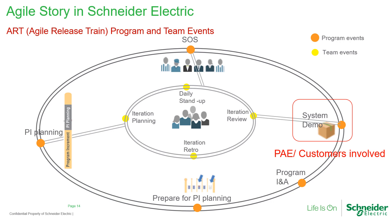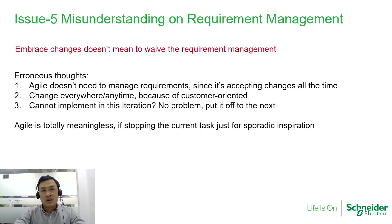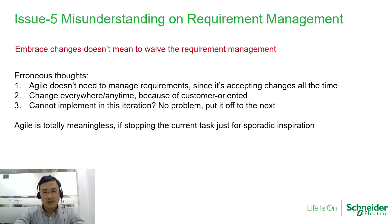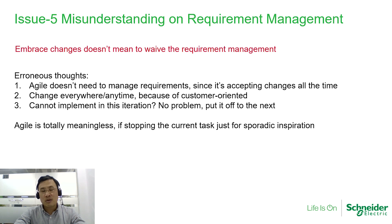The fifth misunderstanding is about requirement management. Embracing changes does not mean waiving requirement management — we still need careful requirement management. Three wrong ideas: First, Agile does not need requirement management since it accepts changes all the time — this is totally wrong. Second, that every change request is accepted because Agile is customer-oriented — no. In fact, during each iteration, most requirement changes are rejected. If necessary, we can consider new requirements or requirement changes in the next iteration.